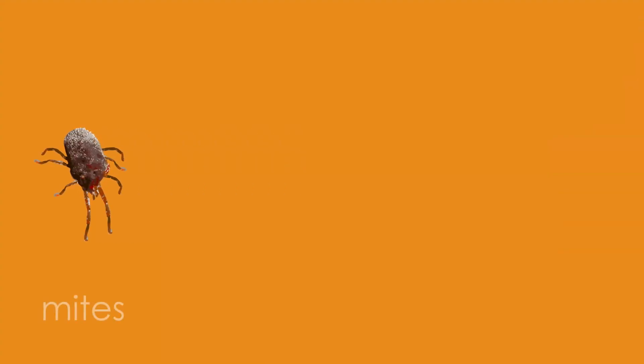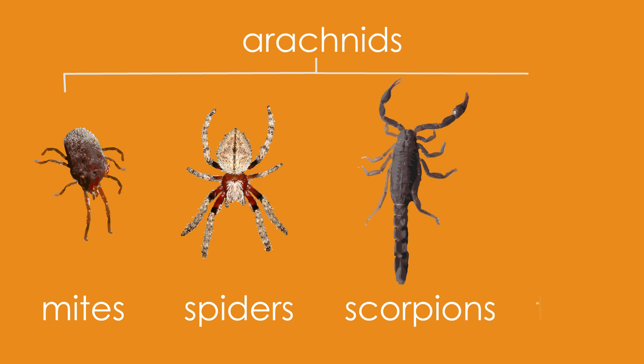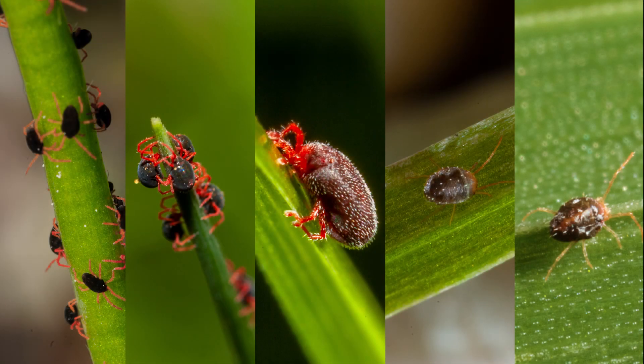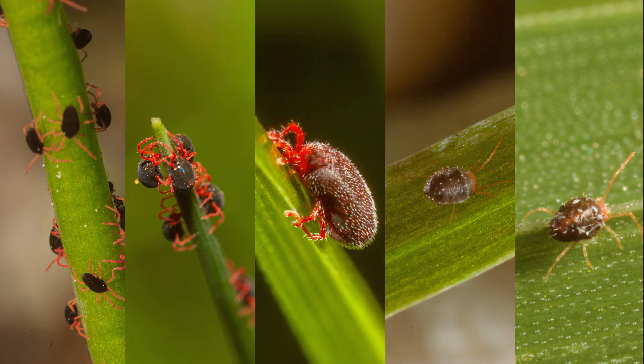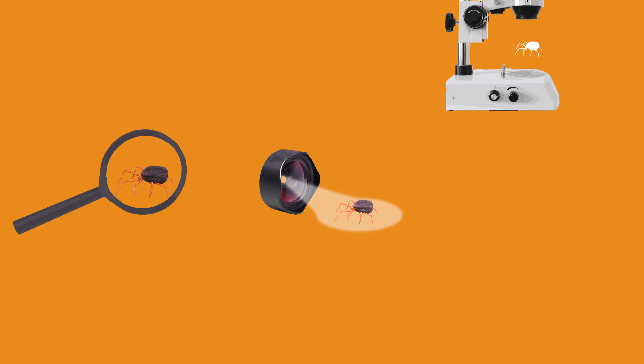Mites are not technically insects — they are actually arachnids and belong to the same taxonomic class as spiders, scorpions and ticks. The mites in this video can look similar at first glance as they more or less have dark-coloured bodies and red-orange legs, but there are key differences which can be seen with a hand lens, smartphone macro lens, or a microscope.